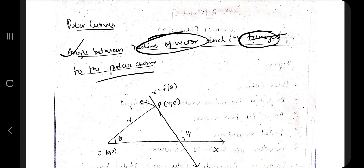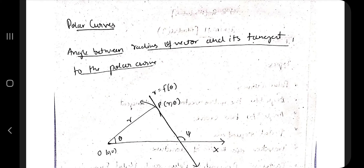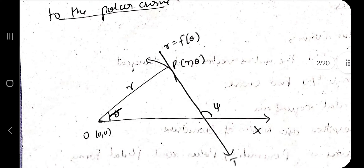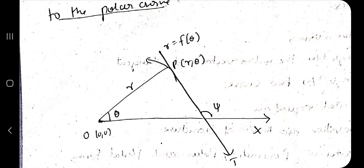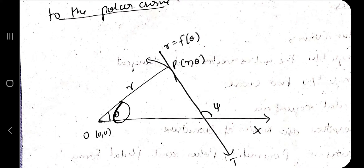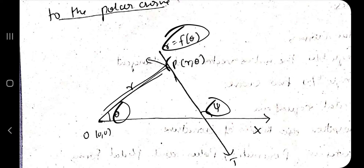What do we mean by radius vector? If there is a point and from that point there is a line, and a curve is going like this, that line is the radius vector. If you find the tangent at this point, that is the tangent T. This is theta and this is psi, and the equation is r = f(theta), and the point is P(r, theta).